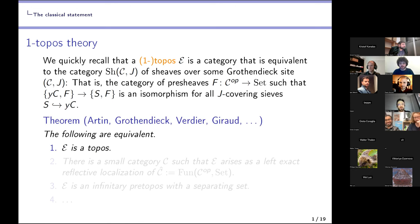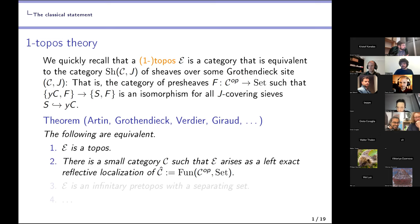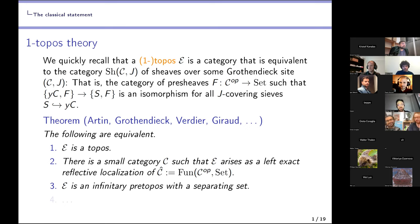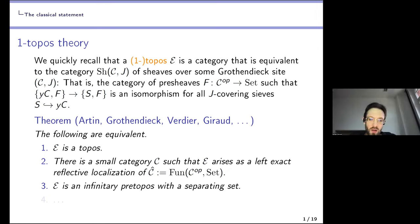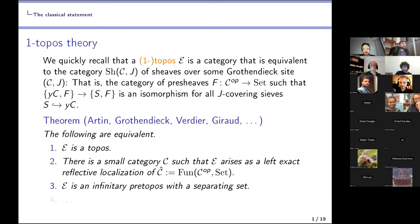There are various descriptions of what a topos is — this is just one of many. It's a classical statement that a category E is a topos if and only if it arises as a left exact reflective localization of a pre-sheaf topos. This is in turn equivalent to certain internal axioms: E is an infinitary pre-topos — an infinitary coherent category which is infinitary extensive and exact — together with a separating set, which makes it locally presentable.